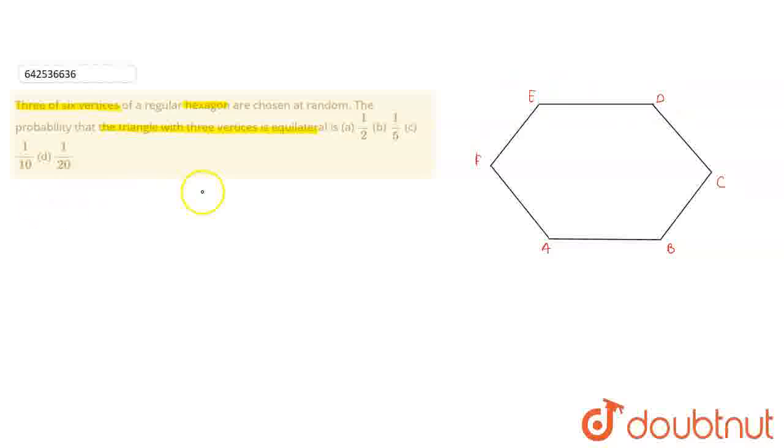This hexagon contains 6 vertices and in the question we are choosing 3 vertices from 6 vertices. So the total ways is 6C3. After solving this,